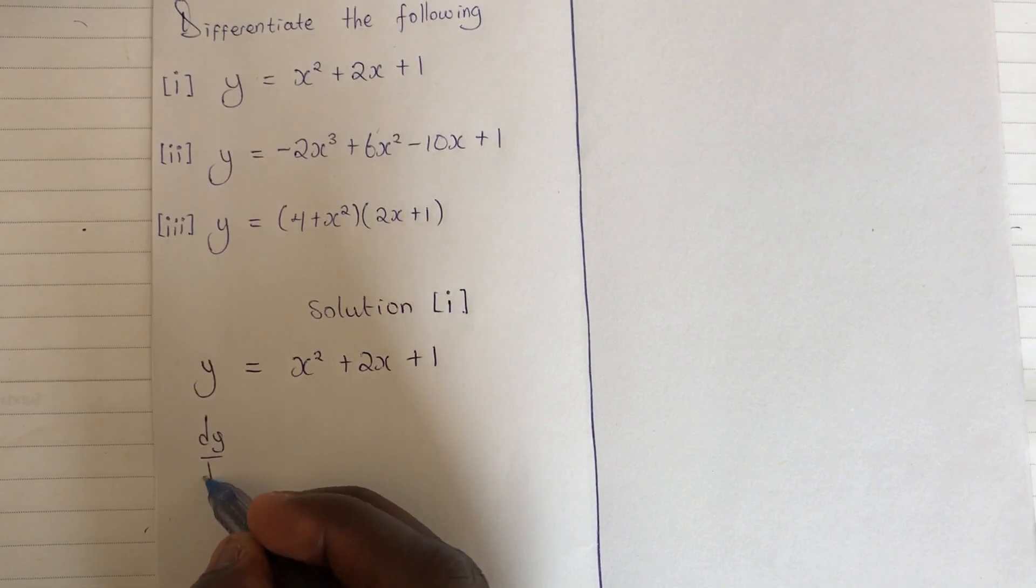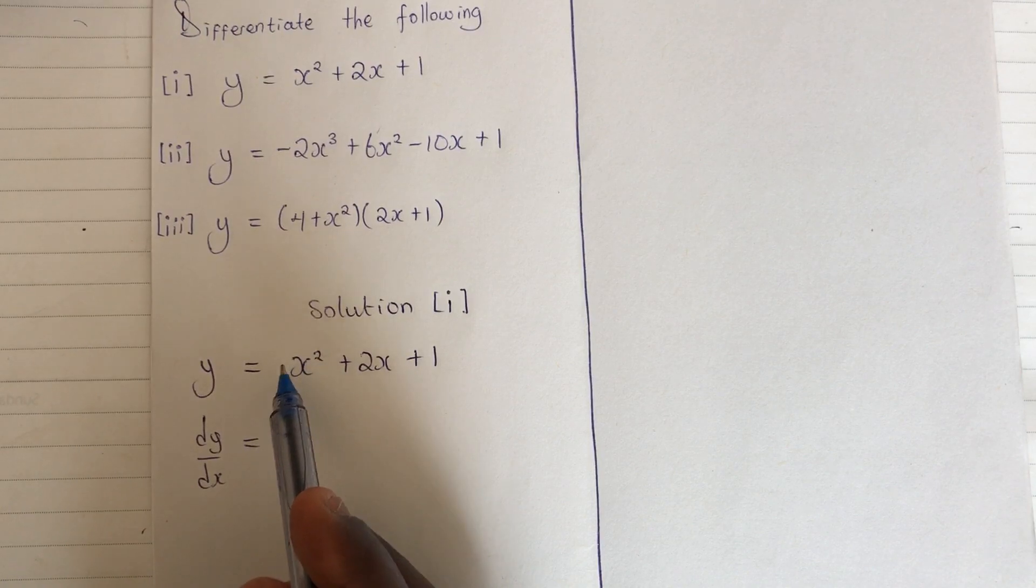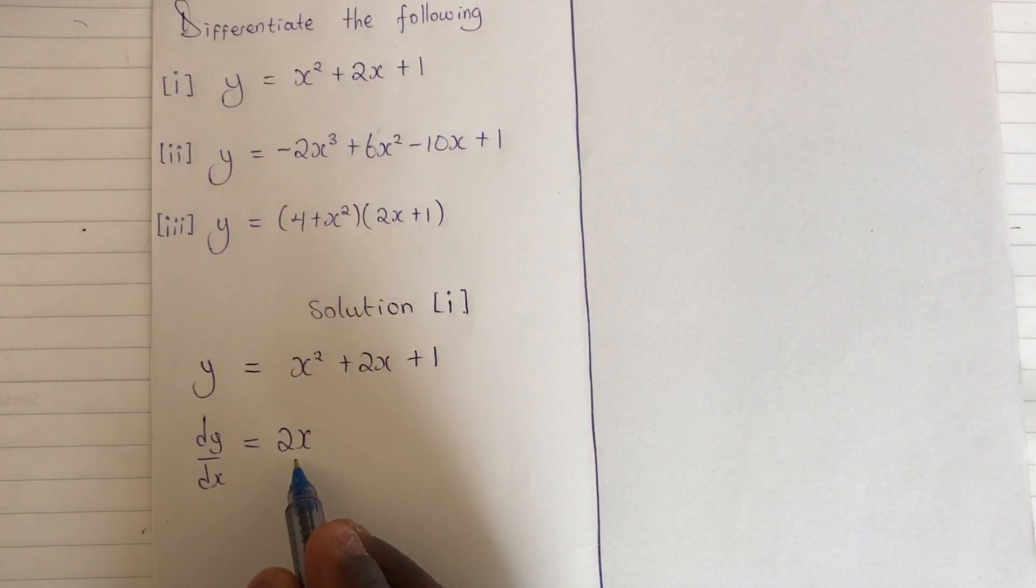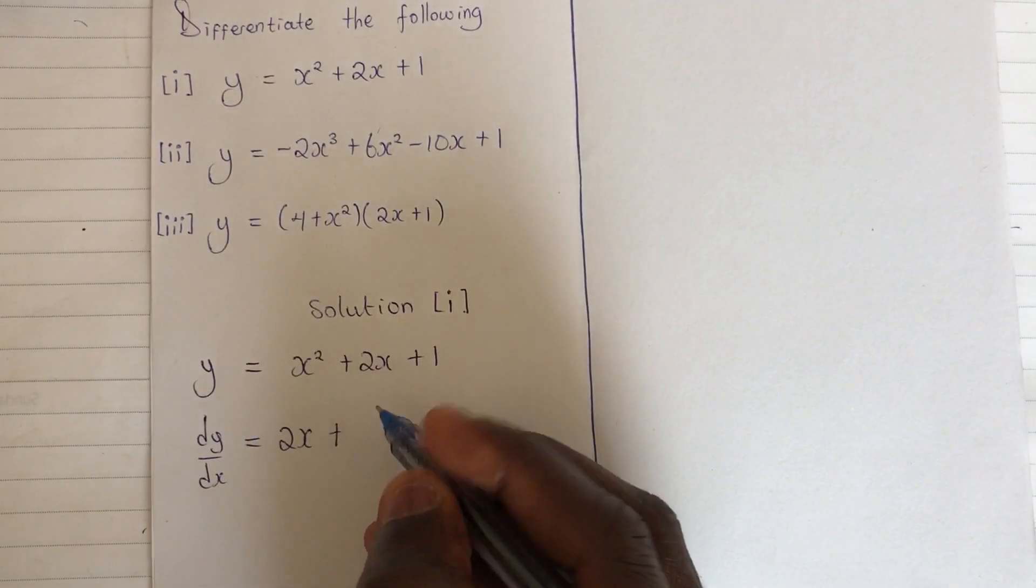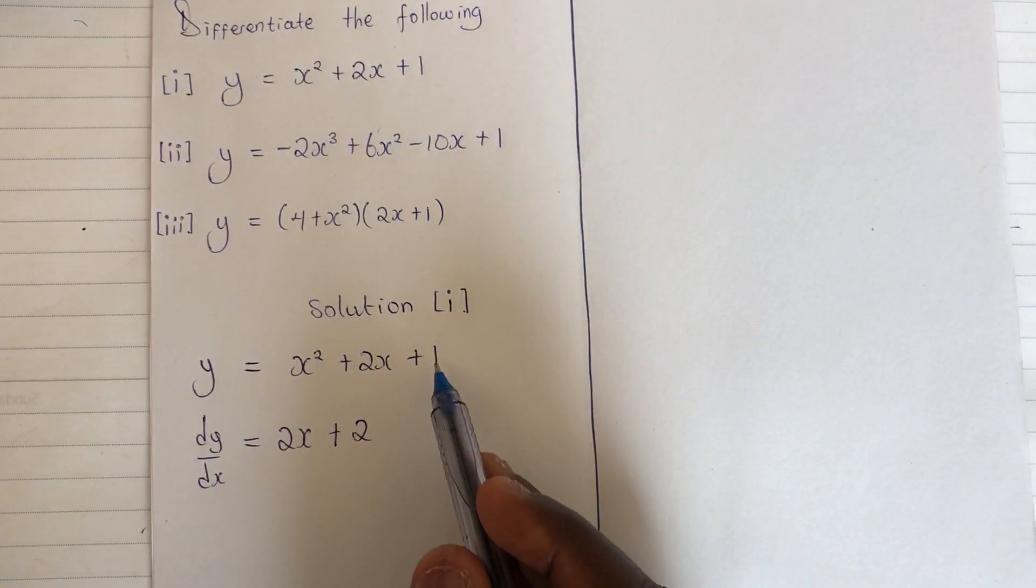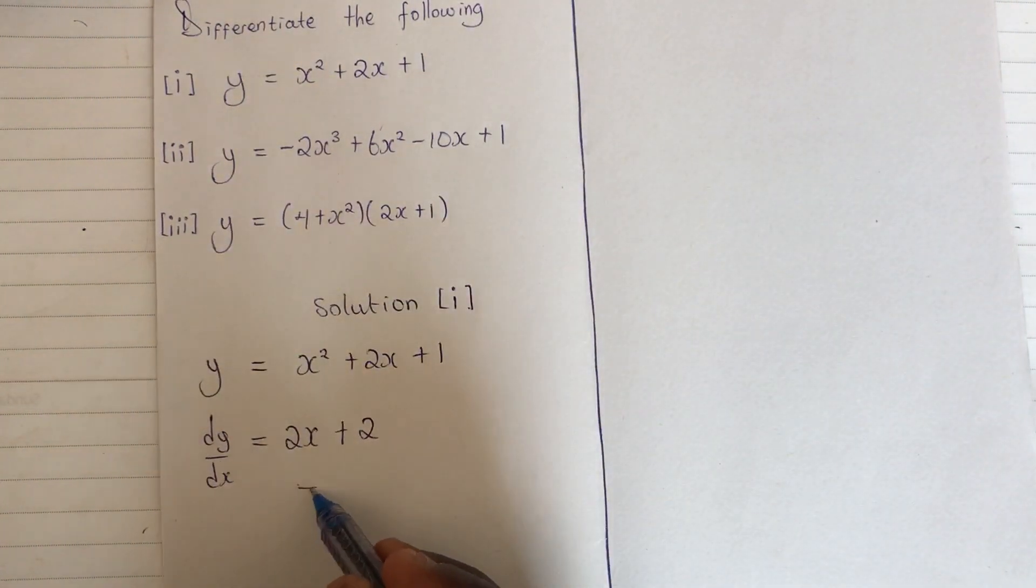2x, reduce the power by one, we'll get 2x. Plus, when I differentiate this I'm getting 2, and then the differential of a constant here is 0. So this is our result.